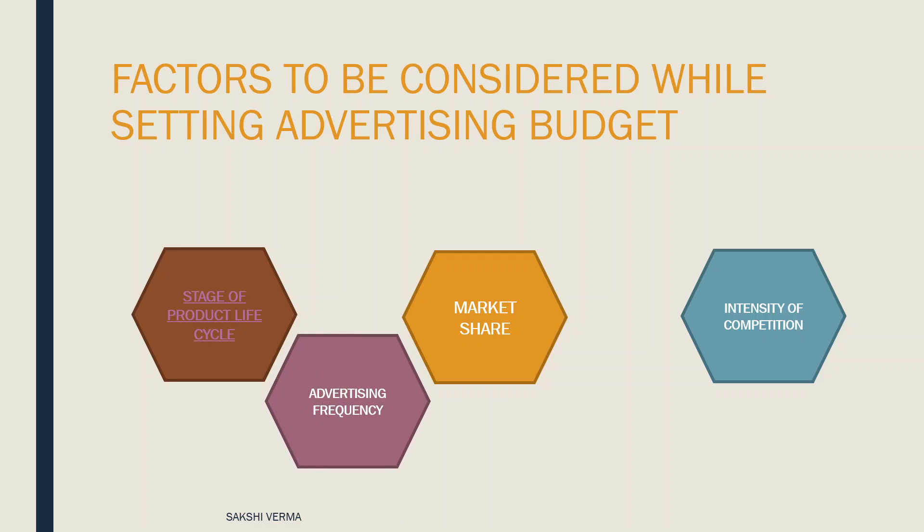Next is advertising frequency — how many times you want to advertise and how much repetition you want to give. Do you want a newspaper ad every day? Do you want a TV ad every hour, or just once a day? For example, the Vodafone Idea ad announcing their merger and new trademark 'Vi' has been running again and again with very high frequency. This is because it is a new thing and they want to establish in the consumer's mind that 'Vi' means Vodafone Idea. The more frequently you advertise, the more budget you need.